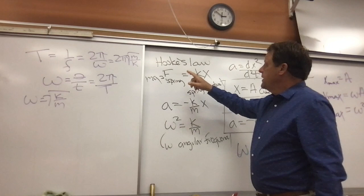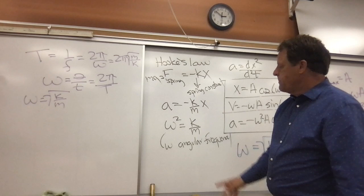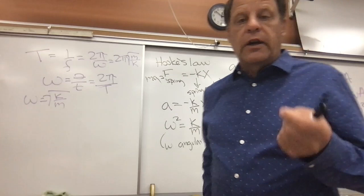As we talked about before, Hooke's Law is equal to negative kx, where k is the spring constant. Since F is equal to ma, a is equal to negative k over m times x. We assume that omega squared is equal to k over m. Therefore, omega is equal to the square root of k over m.